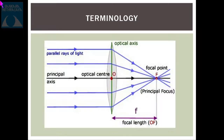A convex lens consists of an optical center. There is a principal axis — a light ray which passes through this center and passes out of the lens unrefracted. When parallel rays of light pass through different points on the optical axis of the lens, they are deviated to a point known as the principal focus. Principal focus is that imaginary point where all the light rays incident through a lens are brought to a focus by simultaneous refraction.